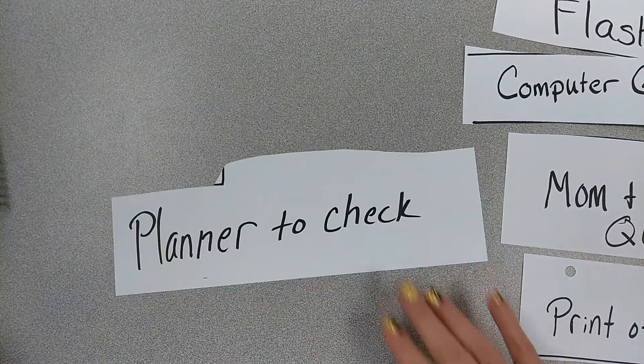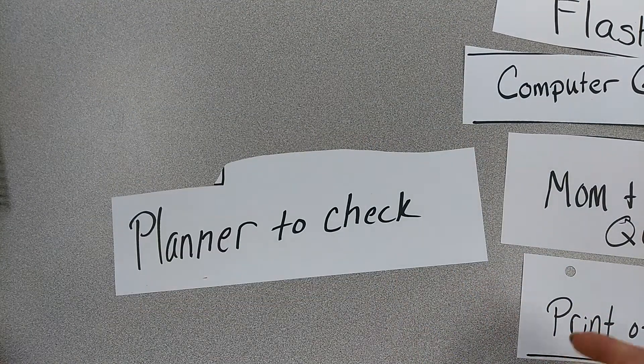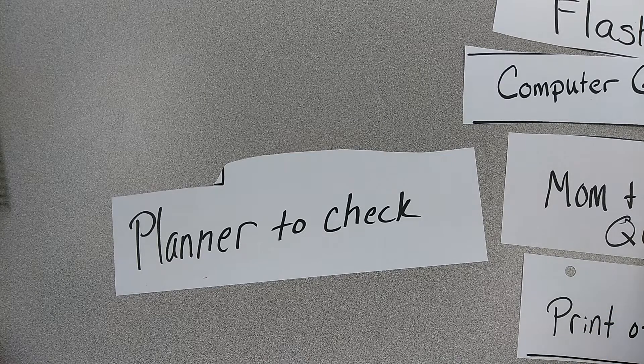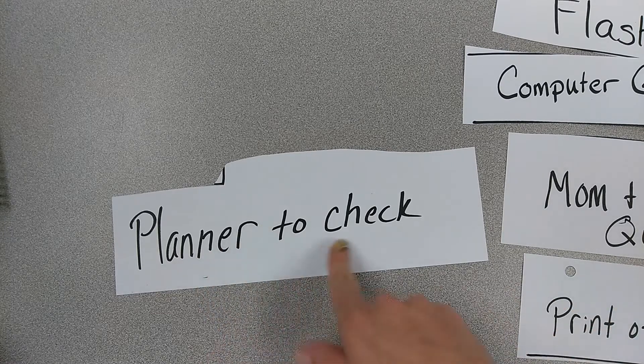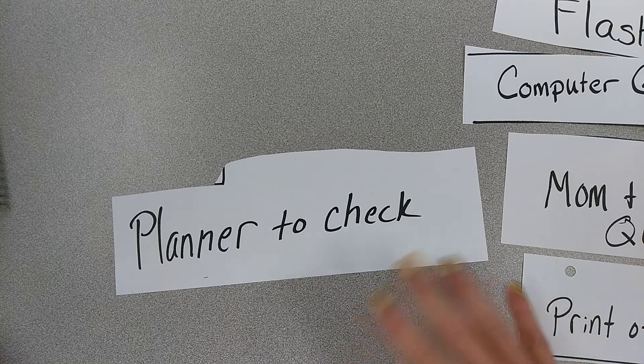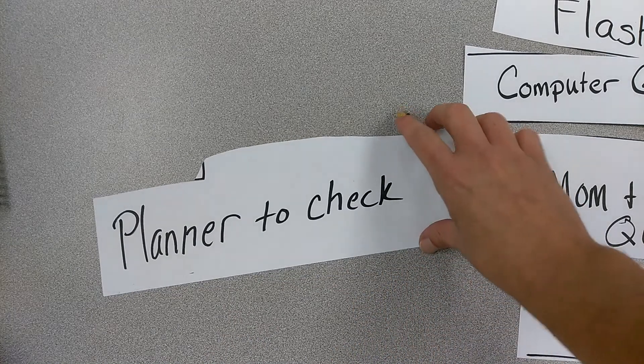Use your planner to check. Let's say you're making flashcards. Make flashcards. Make whatever we didn't finish. You make those flashcards, and use your planner to check, because your planner has the multiplication table inside of it, right? Okay?